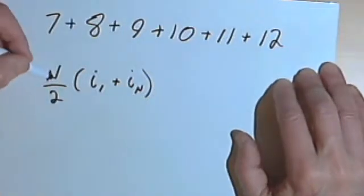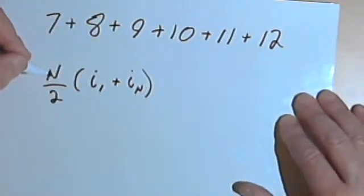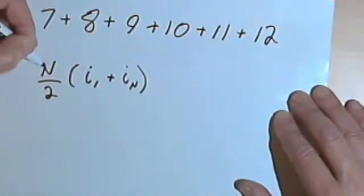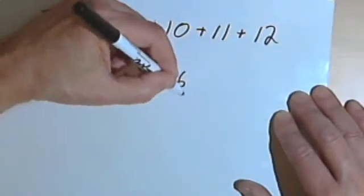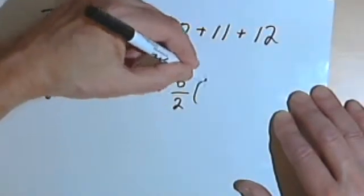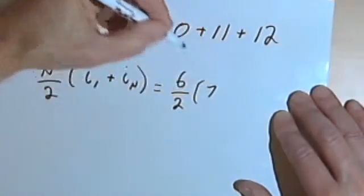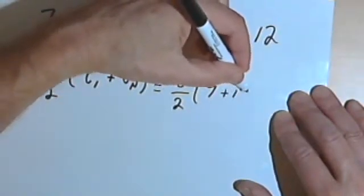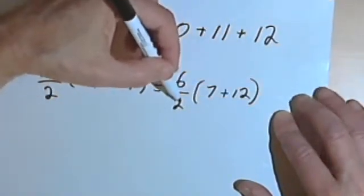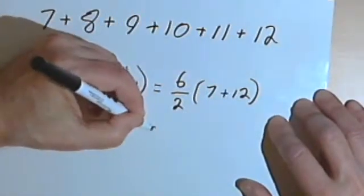Okay, so let's plug the numbers into this new formula and make sure this all works. So the number of terms was 6. So my n over 2 is going to become 6 over 2. i sub 1, the first term, is a 7. And i sub n, the last term, is a 12. So I've got 6 halves times 7 plus 12. So let's see what happens.